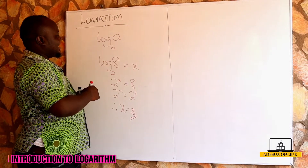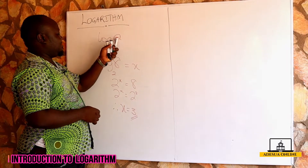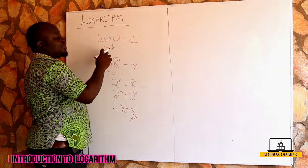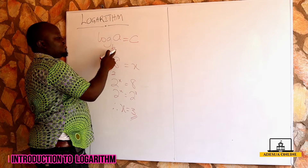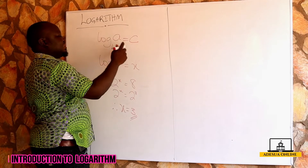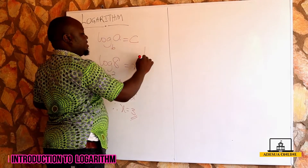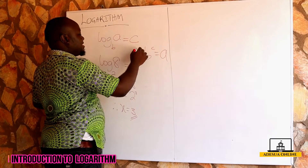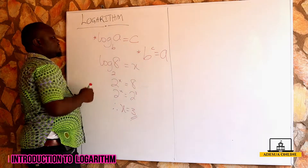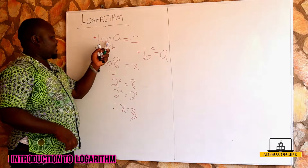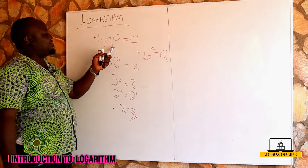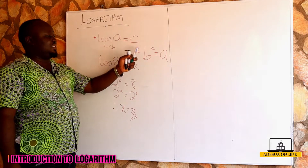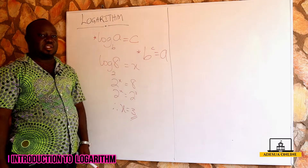So, if I have log a to the base b and this is equal to c, it means: what power do I have to raise b to in order to get a? This means that b raised to the power c is equal to a. That is just logarithm. So if log a to the base b equals c, then b^c = a.